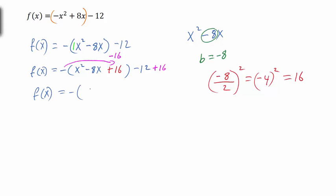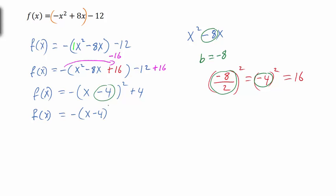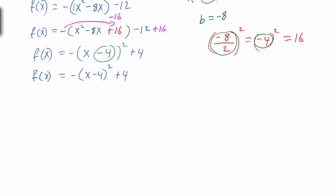Now x² - 8x + 16 is a perfect square, factoring to (x - 4)² — the -4 came from half of b. On the outside, -12 + 16 = 4. So our function in standard form is f(x) = -(x - 4)² + 4. From this we identify the vertex as (4, 4): x - 4 means h = 4, and the outside constant k = 4.